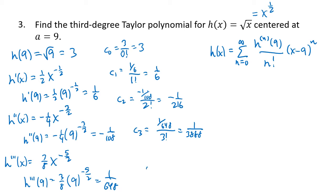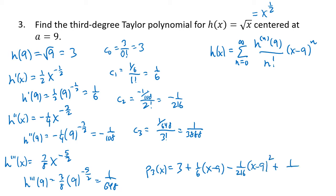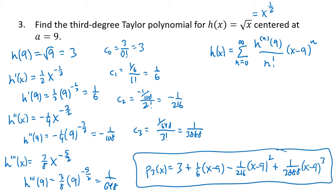With those coefficients, the polynomial is p3(x) = 3 + (1/6)(x−9) − (1/216)(x−9)² + (1/3888)(x−9)³. We're glad to leave it in that format and avoid dealing with those nasty fractions any further.